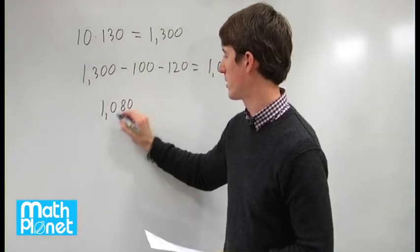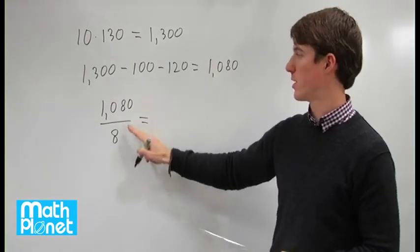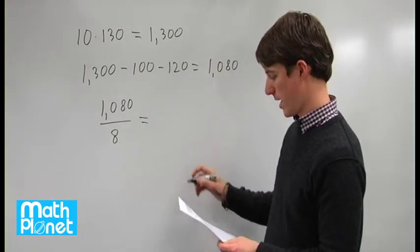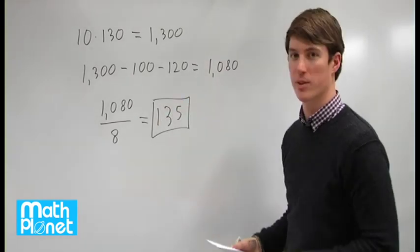1,080 divided by 8 will give us the average, the total divided by the number in the system. So 1,080 divided by 8 gives us 135. So that's our new average for the system.